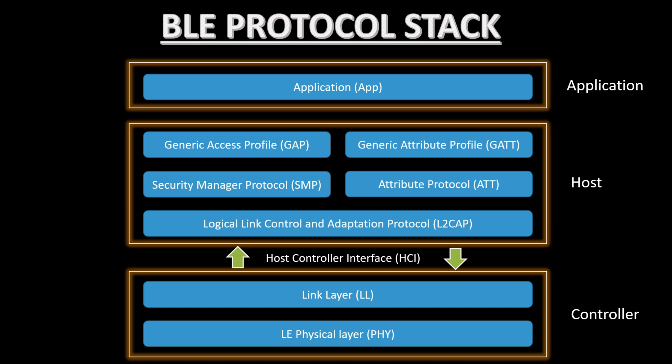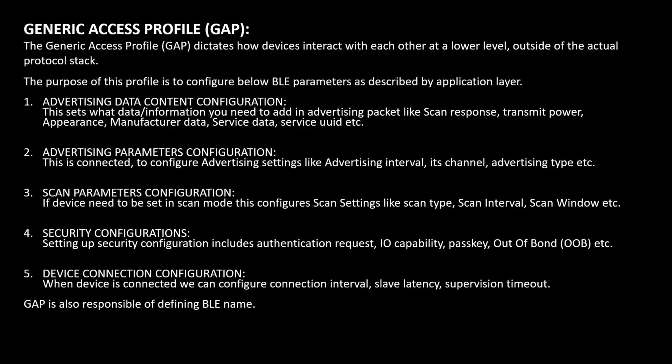The next important layer is the Generic Access Profile (GAP). GAP dictates how devices interact with each other at a lower level, outside of the actual protocol stack. In simple terms, it is used for configuring a Bluetooth device. For ESP32, you can use the GAP library to configure your Bluetooth device. The purpose of this profile is to configure Bluetooth parameters as described by the application layer.